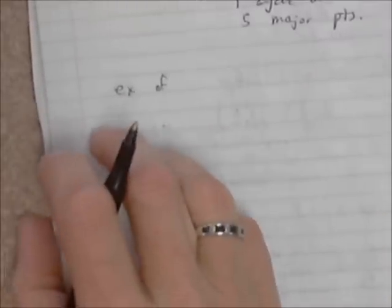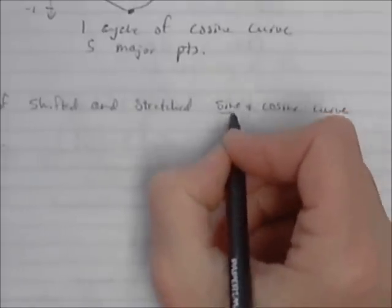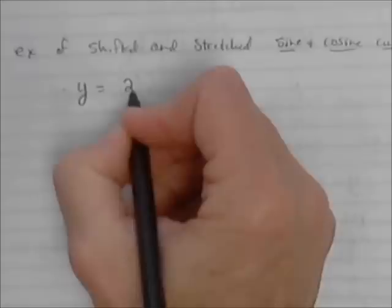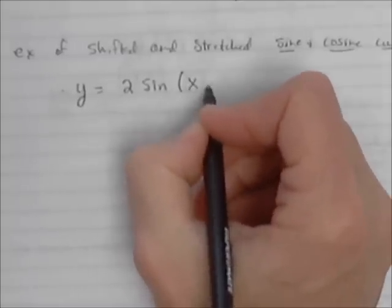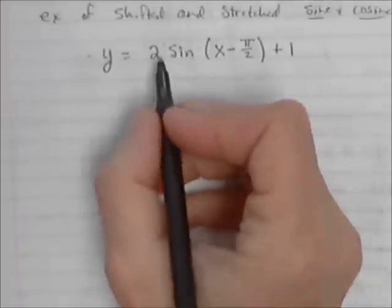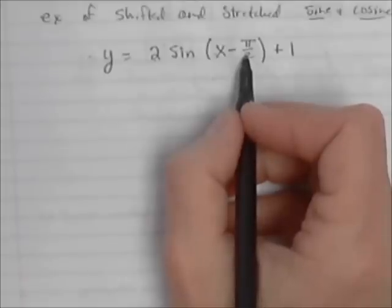Now we'll get into a couple of examples of shifted and stretched sine and cosine curves. Let's say we have y is equal to 2 times the sine of x minus π/2, plus 1. What we have is an amplitude equal to 2, a frequency equal to 1, a shift of π/2 to the right, and up 1.